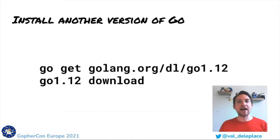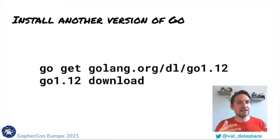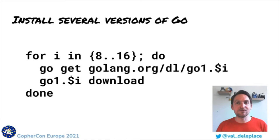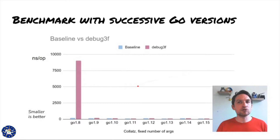The inlining has evolved and improved in newer releases of Go. To test a specific Go version, say 1.12, it's very convenient to simply go get it with these two commands — I really love this feature of the tooling. To compare with many versions of Go, I can download many versions of Go in a bash loop. In this chart, the bars represent execution duration of my Collatz-with-debug benchmark. Smaller bars are better.